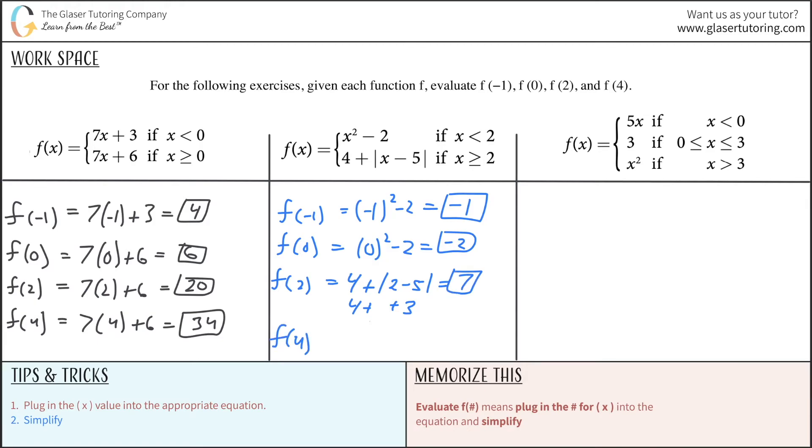And last but not least, we'll evaluate f of 4. Same equation because it falls under this constraint again. So it's going to be 4 plus the absolute value of 4 minus 5. 4 minus 5, and again, this would turn out to be a negative 1 inside, but then take the absolute value that's positive 1, add that to 4, and that works out to be a 5.